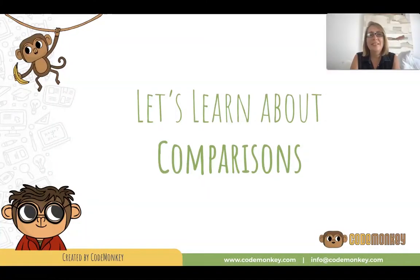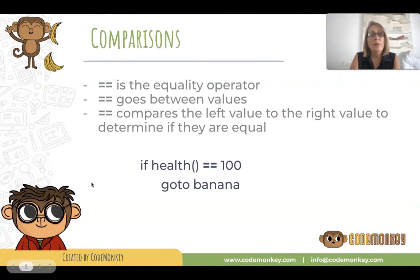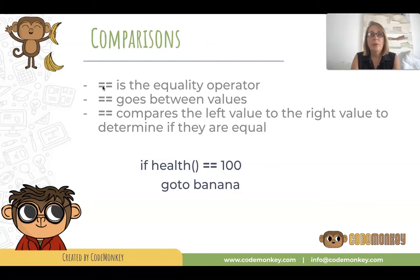Welcome to Comparisons. Let's learn about comparisons. The equal equal sign is the equality operator — two equal signs next to each other. A single equal sign is the assignment operator used with variables, but when you want to see if two values are equal, you use two equal signs. The equality operator goes between values and compares the left value to the right value to determine if they are equal or not.